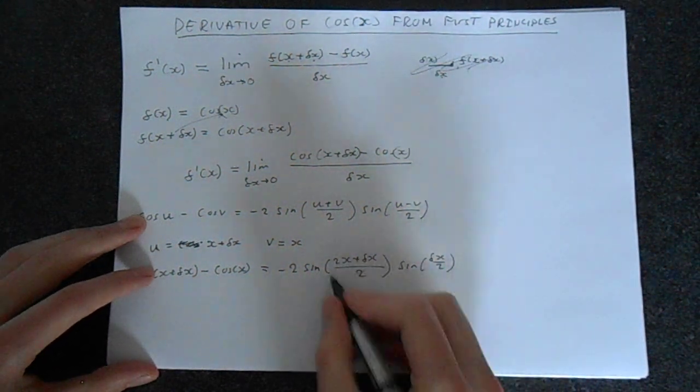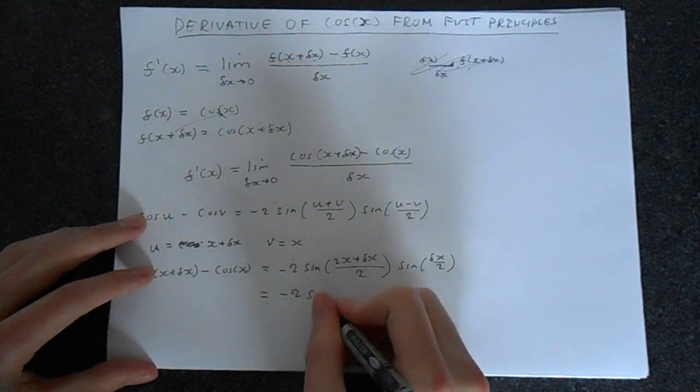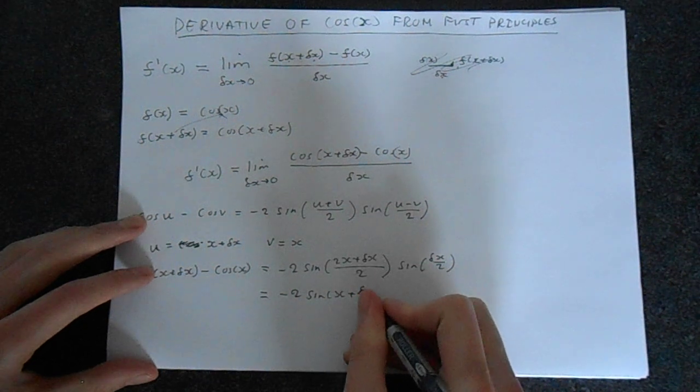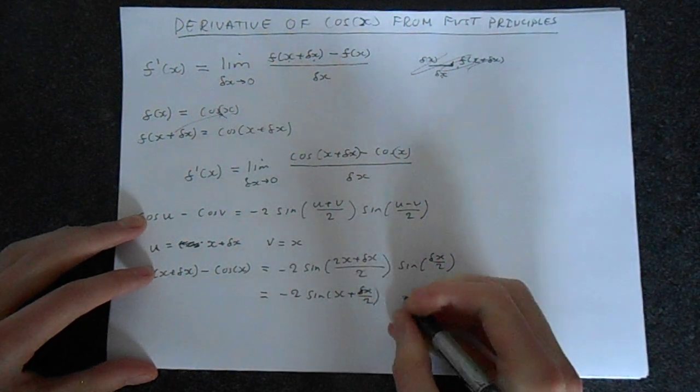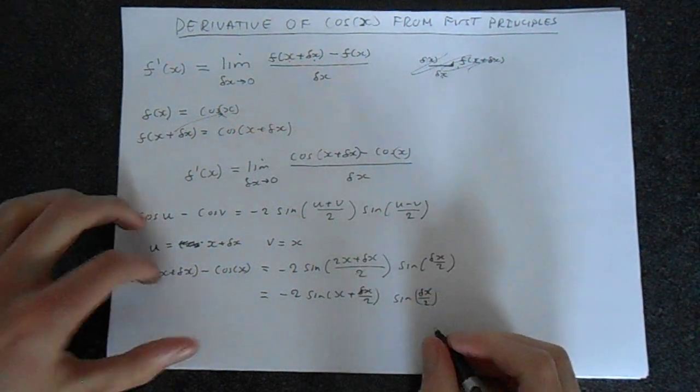Now we can cancel this down a bit and write this in an alternative form. So we can say that minus 2 sine x plus delta x over 2, sine delta x over 2.